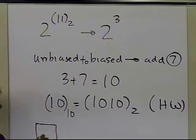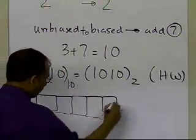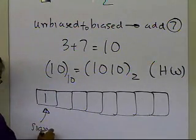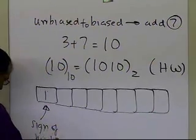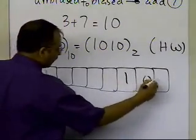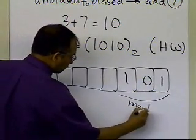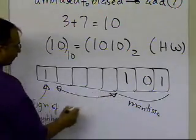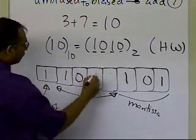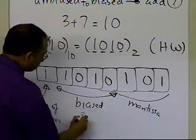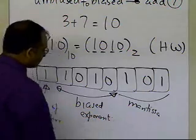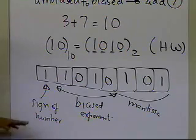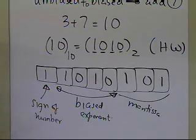Going back to the 8-bit word: we already had 1 for the sign of the number, and 1, 0, 1 for the mantissa. The 4 bits for the biased exponent will be 1, 0, 1, 0. So the complete 8-bit representation of minus 13.9 is 1 | 1010 | 101 — that is the 8-bit word with the biased exponent. And that's the end of this segment.